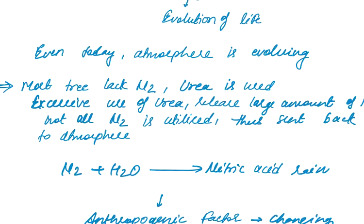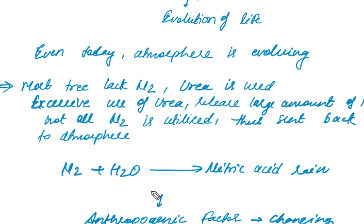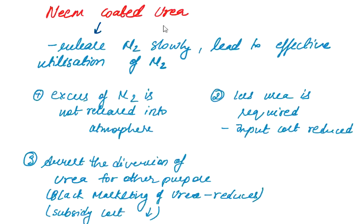As most of the trees lack in nitrogen, we require urea. And when excessive urea is used, then nitrogen cannot all be utilized. It is released into atmosphere and causes atmospheric pollution like acid rain. Therefore, neem coated urea is a solution and leads to effective utilization of nitrogen.